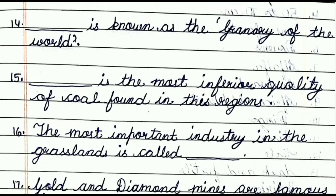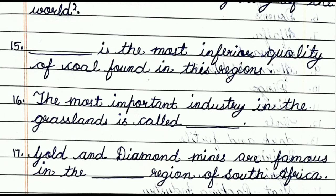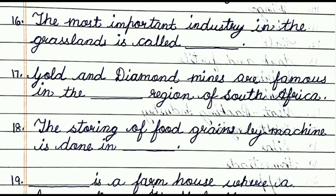Question number sixteen: the most important industry in the grasslands is dash. The answer is meat packing industry. Question number seventeen: gold and diamond mines are found in the dash region of South Africa. The answer is Veld region. Question number eighteen: the storing of food grains by machine is done in dash. The answer is silos.